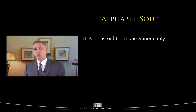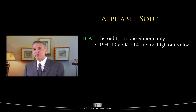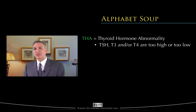Quite simply, it means that one or more of the following hormones — TSH, T3, and/or T4 — are felt to be too high or too low in the bloodstream. In Section 1 of this series, we reviewed these hormones at length. Note that this says nothing about whether the person shows signs or symptoms of hyper or hypothyroidism. THA is based solely on laboratory test results.